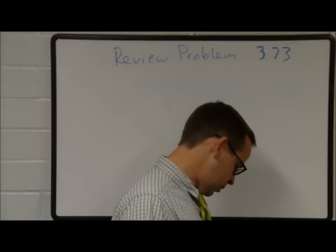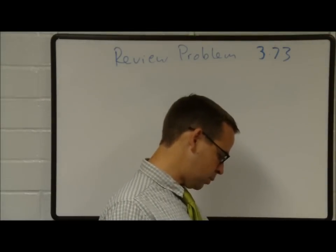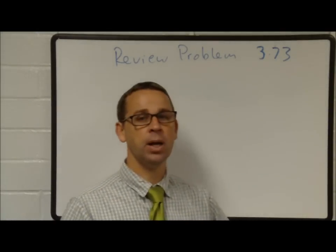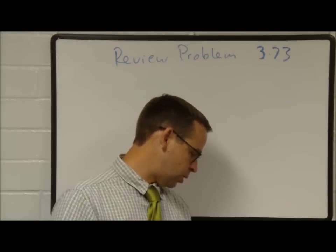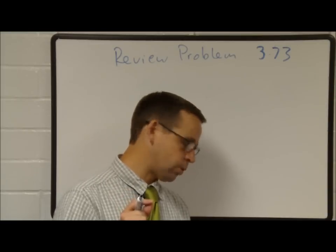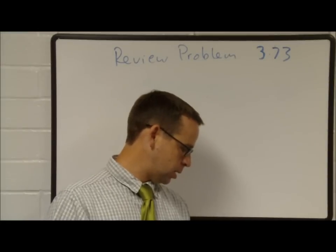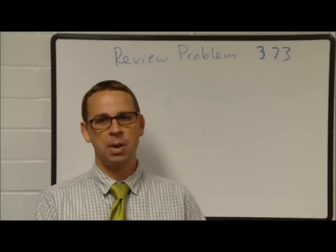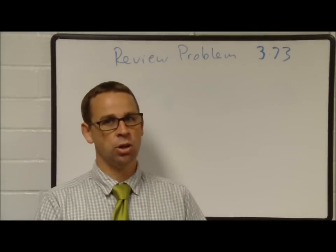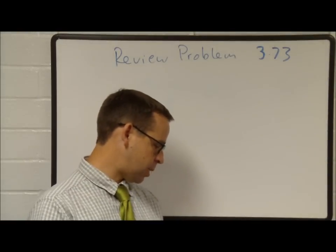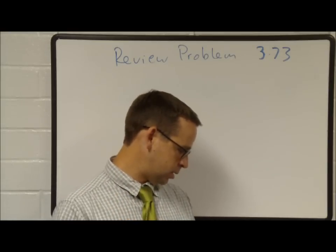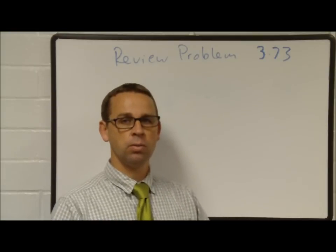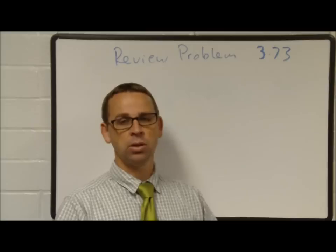Problem 373. If an atom of carbon-12 had been assigned a relative mass of 24 units, what would be the average atomic mass of hydrogen relative to this mass? This is kind of a trick question. If an atom of carbon-12 had been assigned a relative mass of 24, then the relative mass of a hydrogen atom would be 2, but the actual mass of hydrogen would still be the same.